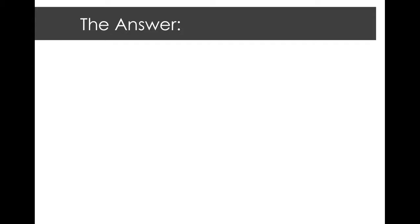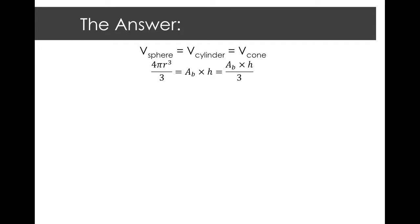Here's how the answer would go. You have the volume of the sphere equal to the volume of the cylinder, which is also equal to the volume of the cone, because they are equivalent solids. Here are the formulas for each solid in terms of their volume. I begin with the volume of the sphere because I know everything needed to solve it. When I plug it all in, 4 pi times 3 cubed divided by 3 gives me 36 pi, or approximately 113.04.